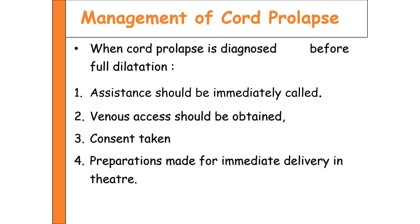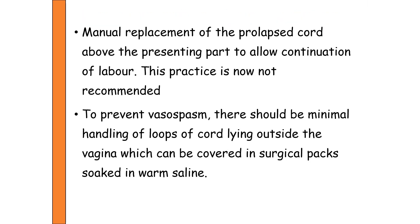When cord prolapse is diagnosed before full dilatation, assistance should be immediately called — an obstetrician, a pediatrician, and the full emergency team should be ready. Start an IV line, obtain consent from the mother, and make all arrangements for cesarean delivery. Manual replacement of the cord above the presenting part is generally not recommended as it risks cord spasm. If the umbilical cord is exposed to the external atmosphere, vasospasm can occur; to prevent this, cover the cord with warm sterile saline-soaked surgical packs.